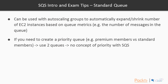SQS can be used with Auto Scaling groups to automatically expand or shrink the number of EC2 instances based on queue metrics, such as the number of messages in the queue. If you need a priority queue — for example, premium versus standard members — you cannot create one directly in SQS. Instead, you use two separate queues, allocating more resources to the premium queue, or processing the premium queue first and only processing the standard queue once it is empty.